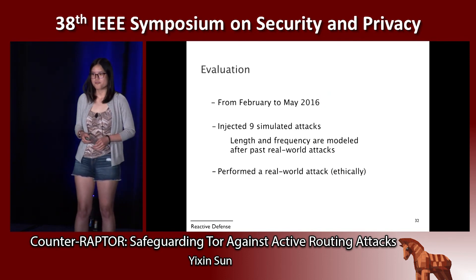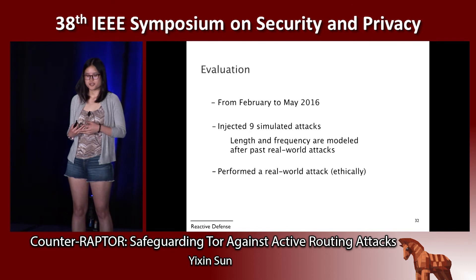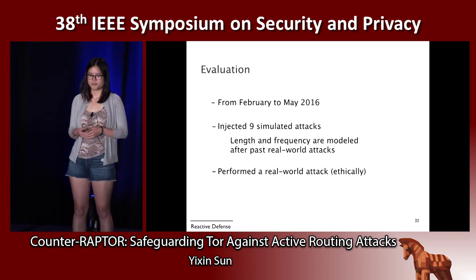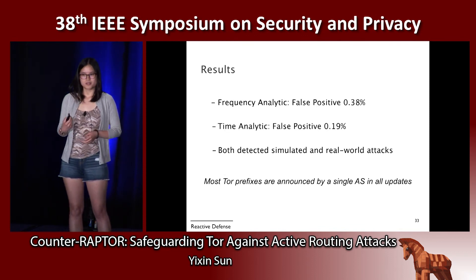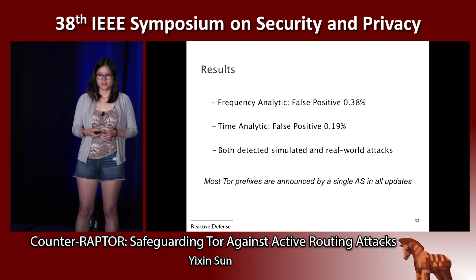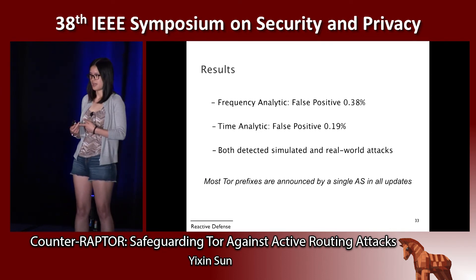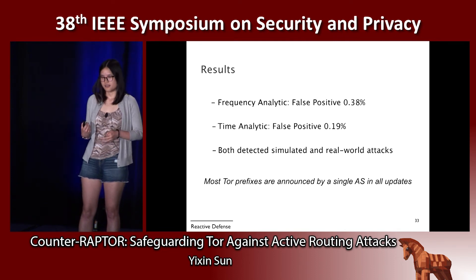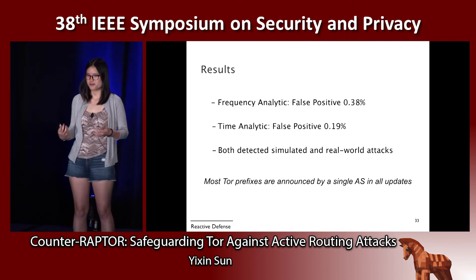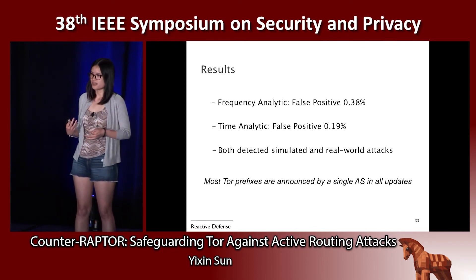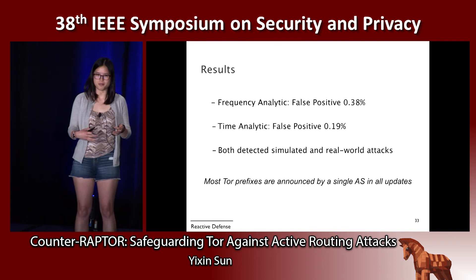We evaluated the system from February to May last year, injecting nine simulated attacks modeled after past real-world attacks, and also performed a real-world attack ethically to evaluate the system. Both the frequency analytic and time analytic had very low false positive rates and were able to detect all simulated and real-world attacks. The results highlight that most Tor prefixes are relatively stable, announced by a single AS in all their updates — which is why the analytics can detect attacks while maintaining low false positive rates.